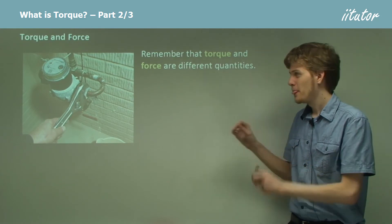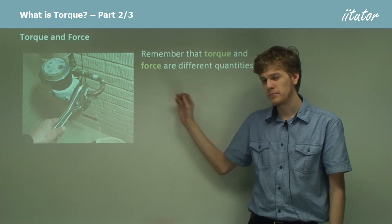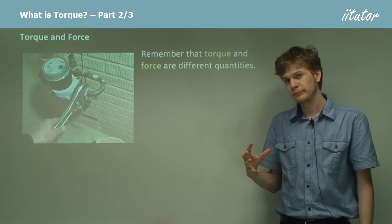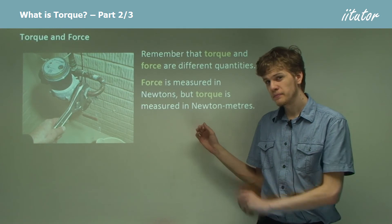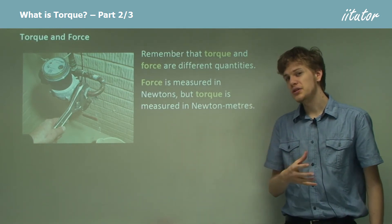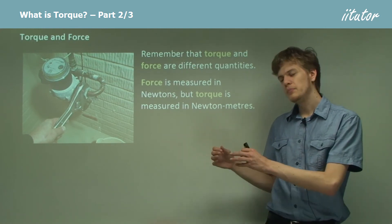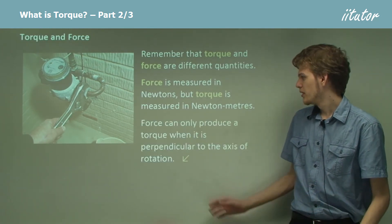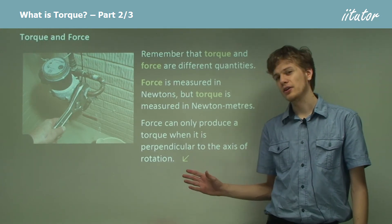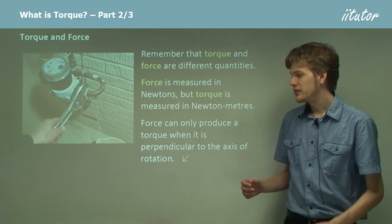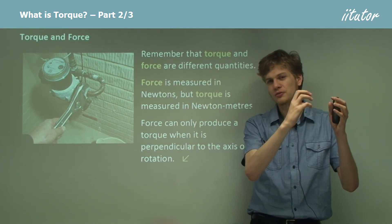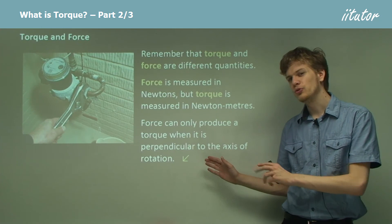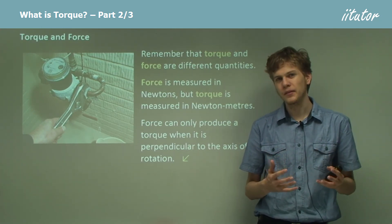Torque and force are not the same thing. Torque causes objects to turn or rotate, and force causes objects to move. Force is measured in newtons, but torque is measured in newton-meters, because we calculate torque by multiplying a force in newtons by a distance in meters. Force can only produce a torque when it is perpendicular to the axis of rotation. That means that if we take a spanner and try to push it forward toward the axis of rotation, it's not going to turn. This will be an important property of torque when we talk about motors and generators and how they work.